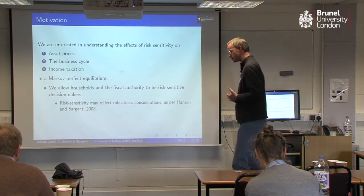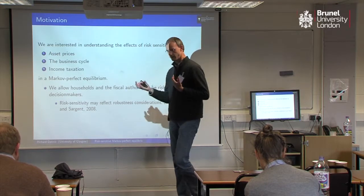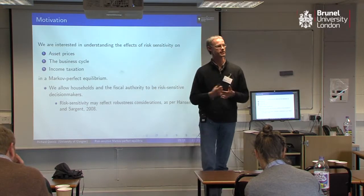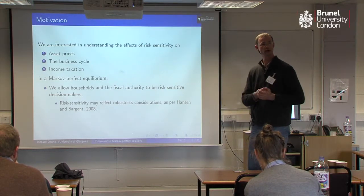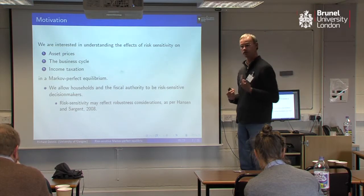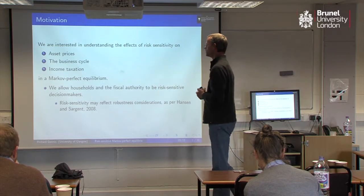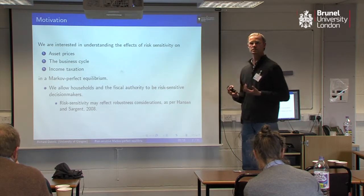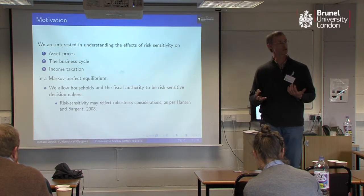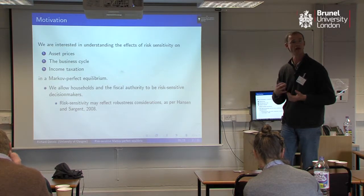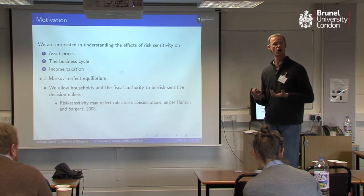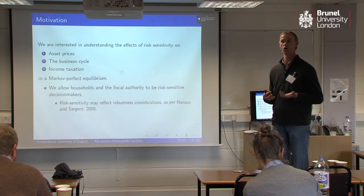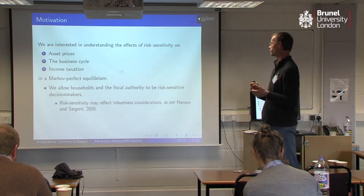So as I mentioned, I'm going to have an economy that is populated by three types of agents. Two of these agents are going to be making inter-temporal type decisions — one is a government and another is households. When the government is conducting policy, and it's going to be fiscal policy here, they're going to be doing so without the ability to commit. So I'm going to be looking at a Markov perfect equilibrium — discretionary policy, if you like.